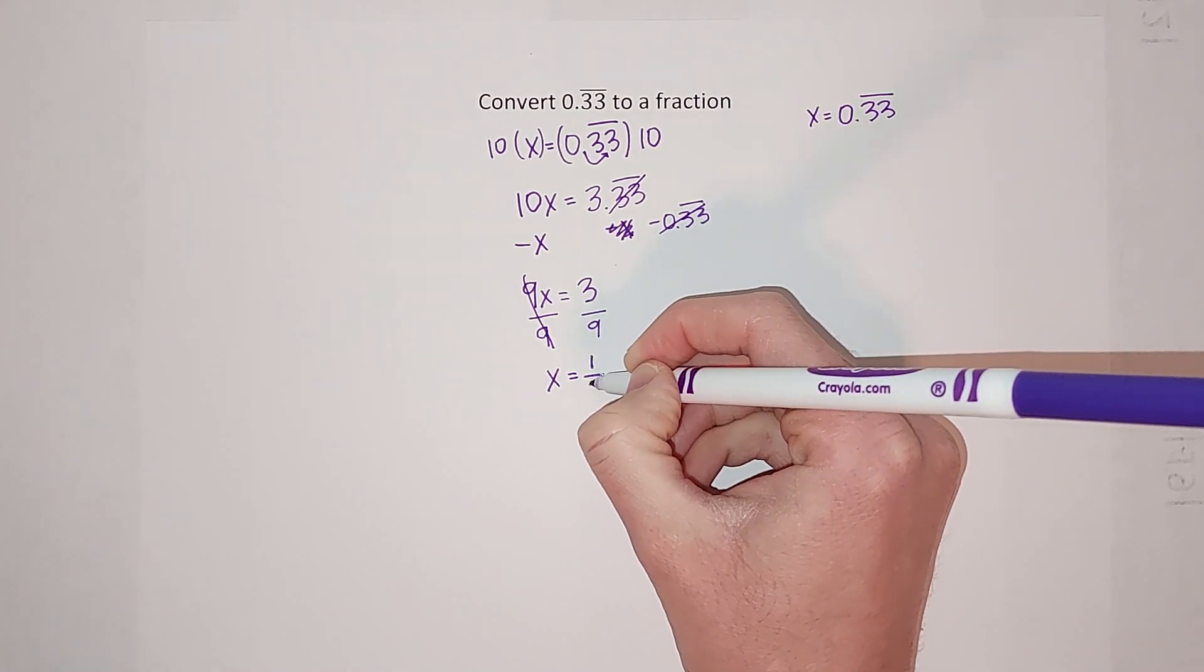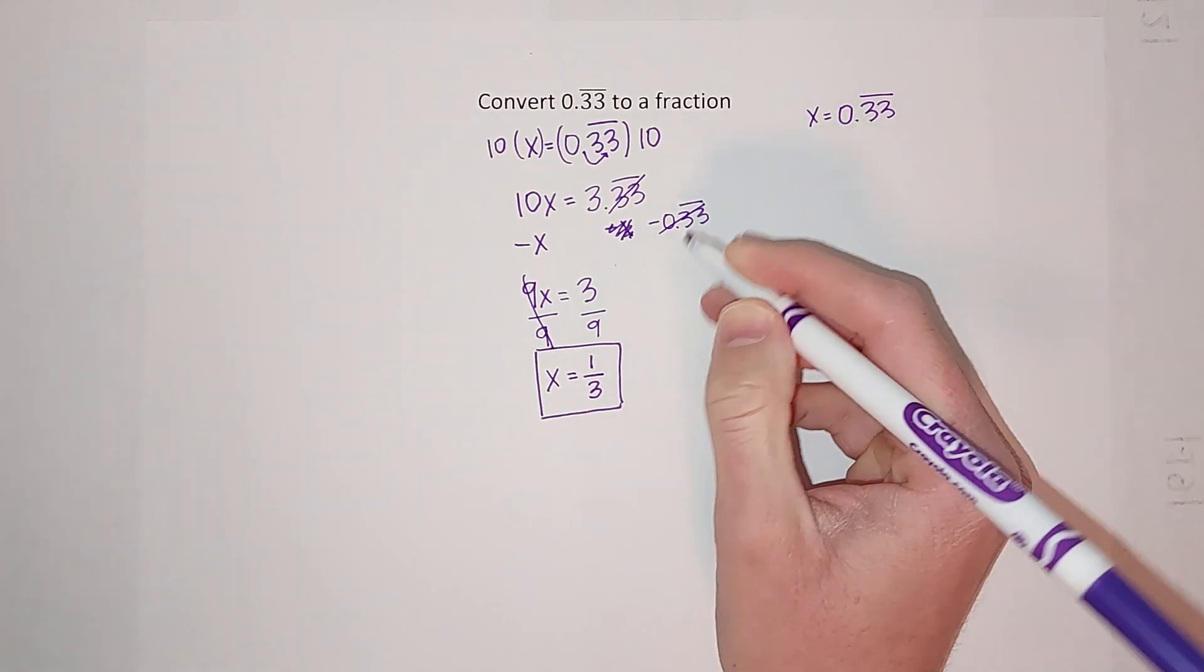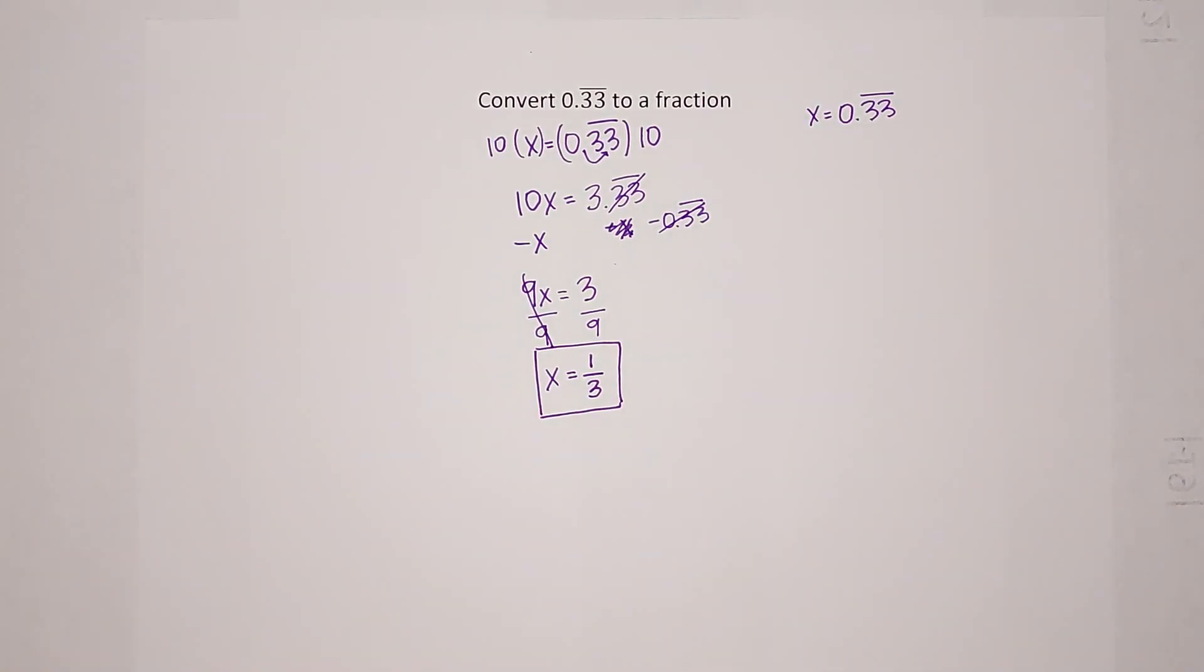Now if you don't believe me, go plug 1 third into your calculator. It'll probably round it for you, but it'll probably say 0.33333333. Obviously it can't go on forever, but you get the idea.